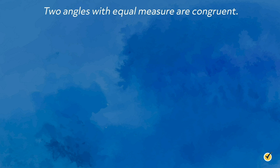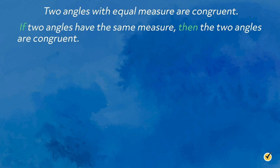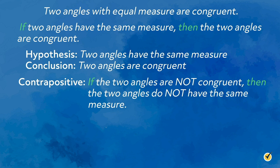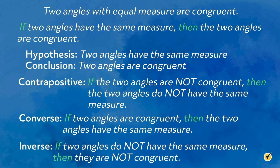Here is a typical example of a true statement from a geometry class based on the definition of congruent angles: 'Two angles with equal measure are congruent.' We can rewrite it in if-then structure: 'If two angles have the same measure, then the two angles are congruent.' Because the conditional statement and the contrapositive are logically equivalent, we can assume the following to be true: 'If the two angles are not congruent, then the two angles do not have the same measure.' It follows that the converse — 'if two angles are congruent, then the two angles have the same measure' — is logically equivalent to the inverse: 'If two angles do not have the same measure, then they are not congruent.'